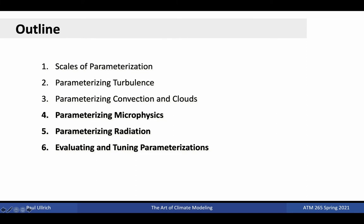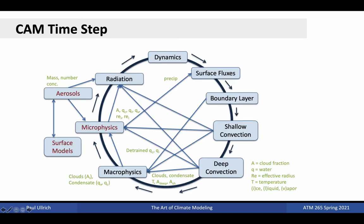In today's lecture, we'll be talking about parametrizing microphysics, parametrizing radiation, and evaluating and tuning parametrizations. We return briefly to this flowchart showing a typical CAM time step, which includes the many parametrizations employed in a typical atmospheric model. Recall that parametrizations can be broadly put into two categories: those needed to represent processes below the truncation scale of the grid, and those that represent processes beyond atmospheric dynamics.